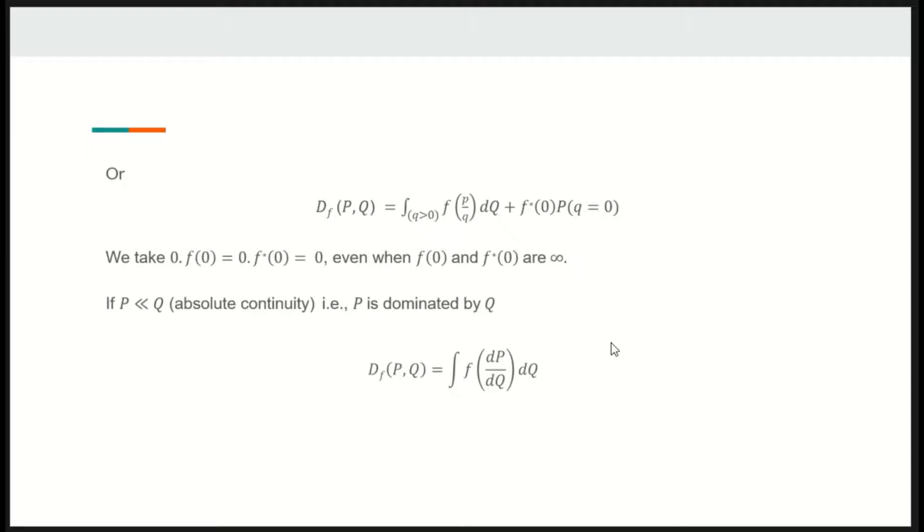If Q dominates P then F-star of 0 equals infinity. As we can see, if Q dominates P then this term goes to 0 and F-divergence can be written only as this term. If Q doesn't dominate P then F-star of 0 goes to infinity and hence divergence between P and Q also goes to infinity.